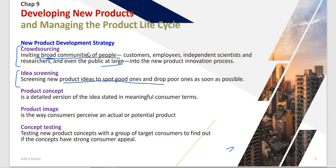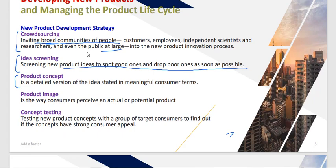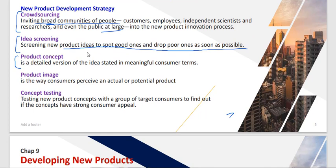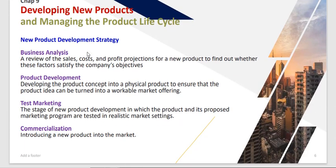Screening is used to spot good ideas and drop poor ones. A product concept is a detailed version of the idea stated in meaningful customer terms — the way the customer perceives the product. Then the product image comes from how the product is perceived from the consumer's point of view. Concept testing involves testing new product concepts with a group of target consumers to see whether the product has strong appeal.